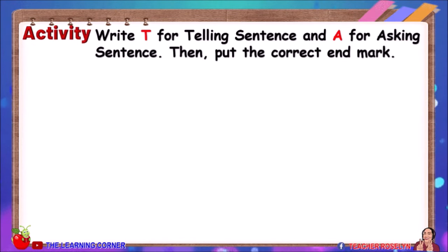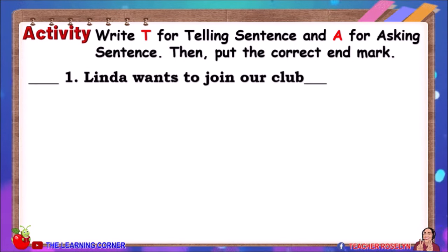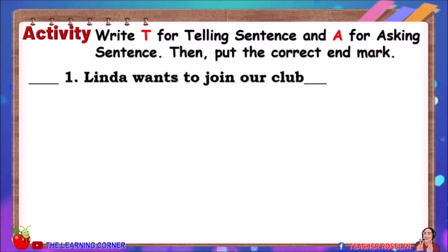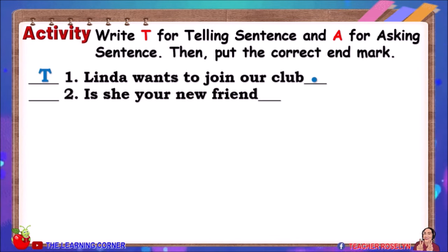Let us answer this activity. Write T for Telling Sentence and A for Asking Sentence. Then put the correct end mark. Number one: Linda wants to join our club. Answer: Telling Sentence.